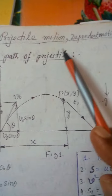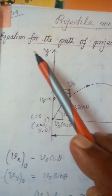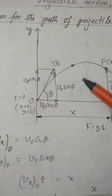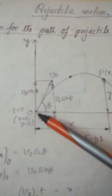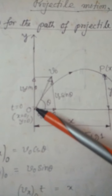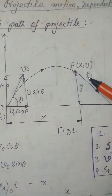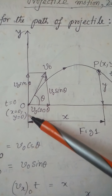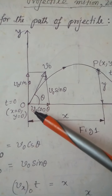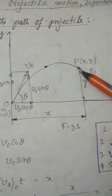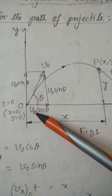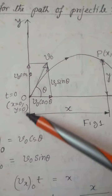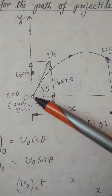Projectile motion. Now we have to find out the equation of the path of the projectile. This is the projectile path we have assumed, because from our experience if you throw a stone it will come back to the ground. Projectile motion is two-dimensional, and we use an XY coordinate system.